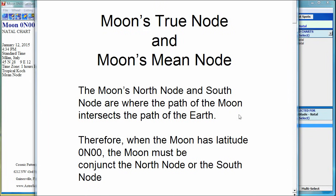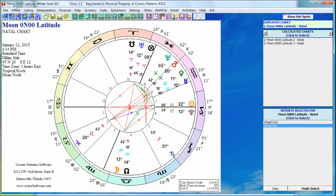It seems like a straightforward idea. Why do we have two different nodes? When the Moon crosses the path of the Earth, the Moon has zero latitude by definition, because latitude is the distance from the ecliptic plane. So once a month the Moon should be conjunct the north node or south node when the Moon's latitude is zero.